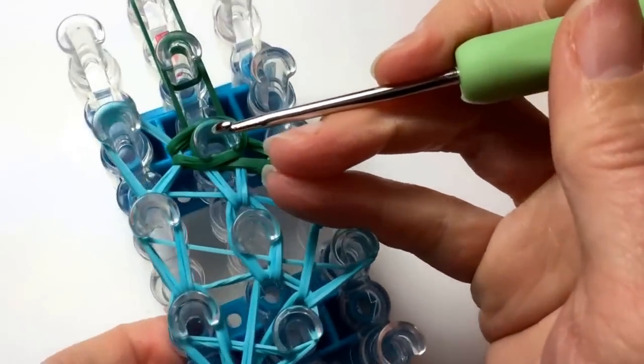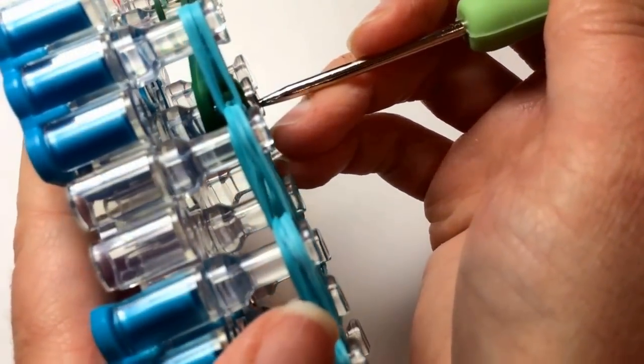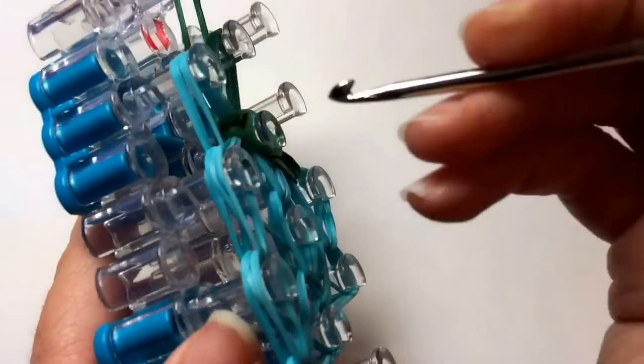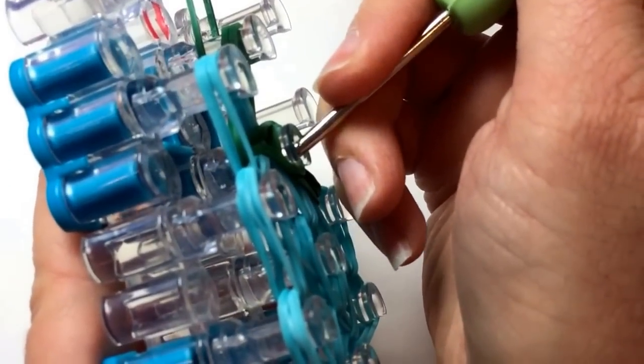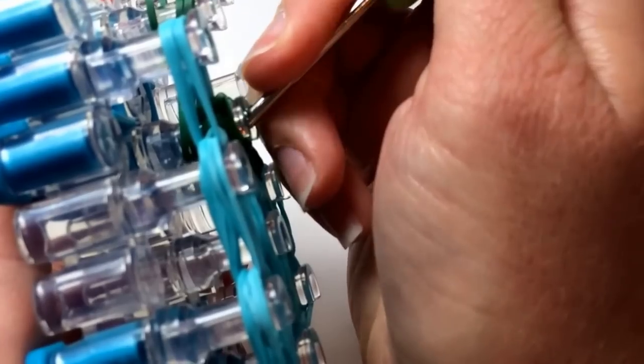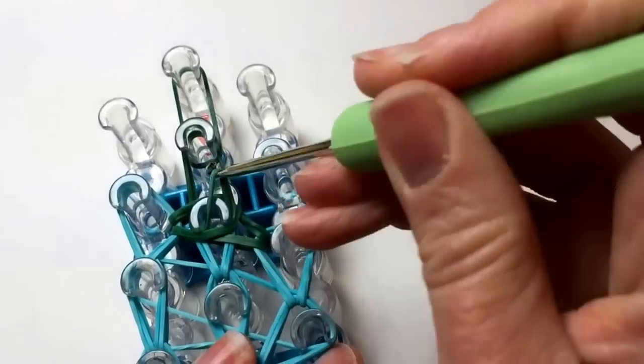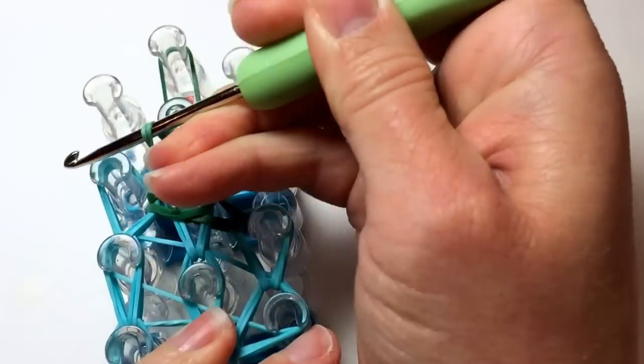Then going down the middle here, we want to look from the side to make sure we get just those two green bands that are going to go forward and bring them up the center.